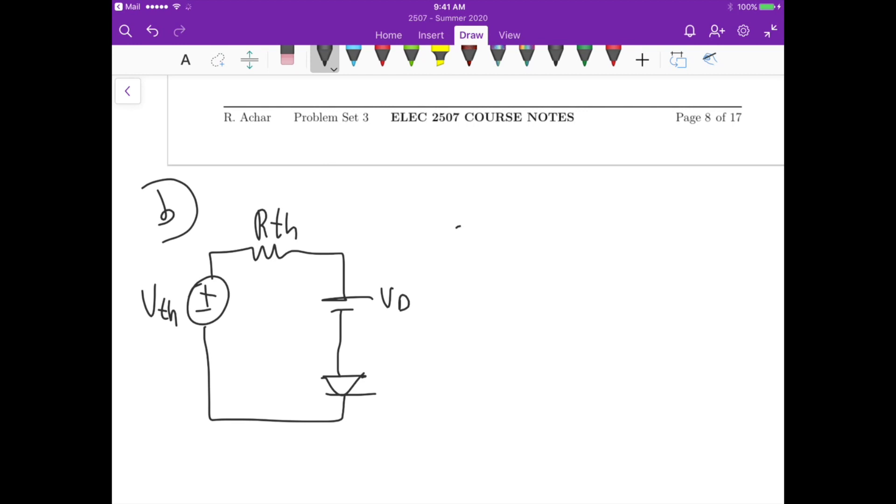So we know that minus VTH plus ID, which is the current flowing through the diode, this is a series path here, times RTH plus VD, that equals to 0. So if you rearrange this equation in terms of ID equals to minus VD divided by RTH plus VTH divided by RTH, that's the equation that we have.